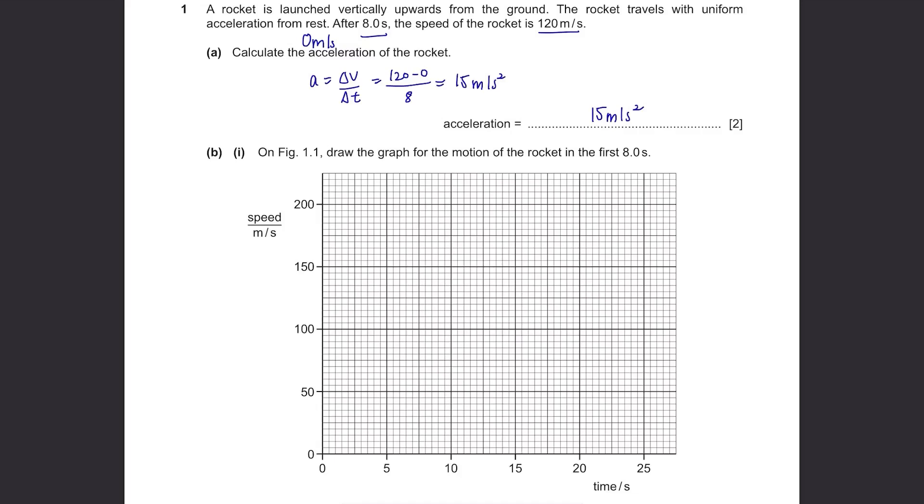Part B. On figure 1.1, draw the graph for the motion of the rocket in the first 8 seconds. We just need to draw how it reached 120 meters per second from rest, 0 meters per second, in 8 seconds. The speed was 0, so we start from 0. Then after 8 seconds, 8 on the graph is over here, at 120. Then connect these two points in a straight line.